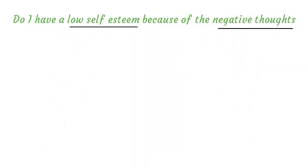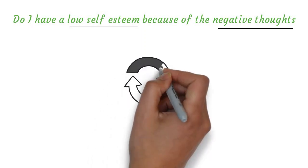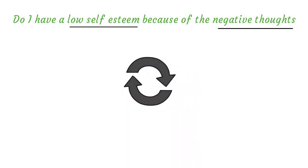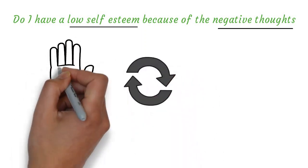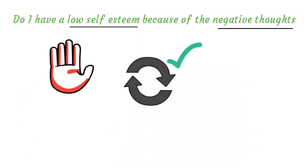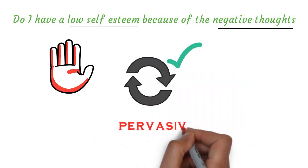It forms these circular patterns, and until you're able to interrupt it, it just continues on and on. Then it becomes pervasive where it affects every other aspect of your life.